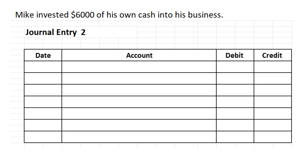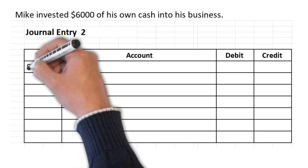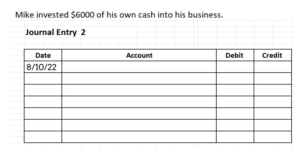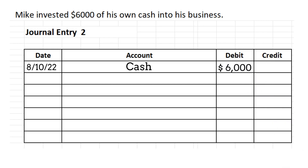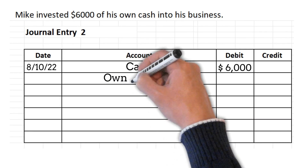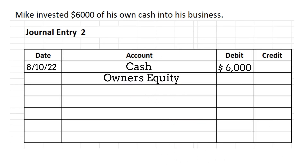In the next example, Mike invested $6,000 of his own cash into the business — journal entry number two. We enter the date, then the account is cash because cash is affected, and since cash is going up we debit it: $6,000 to the debit side. The other account affected is owner's equity, which is credited for $6,000.